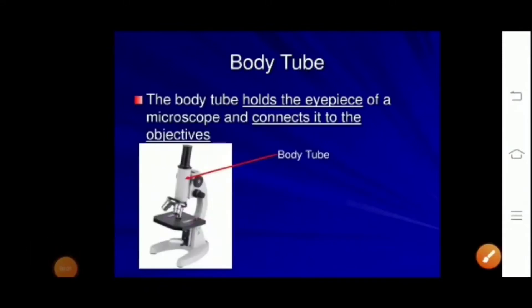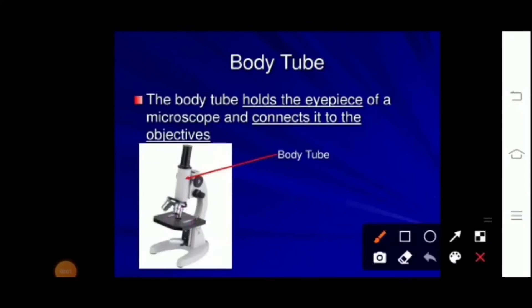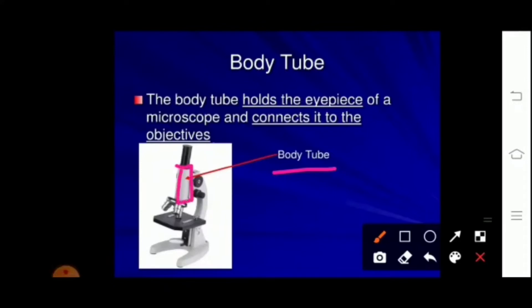Coming to the next part of the microscope: this is the body tube, or tube of the microscope, which is cylindrical in shape. The body tube holds the eyepiece of the microscope and connects it to the objective.